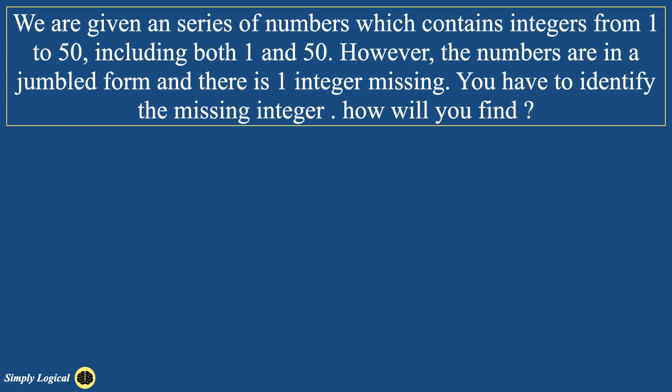We are given a series of numbers which contains integers from 1 to 50, including both 1 and 50. However, the numbers are in a jumbled form, that is they are not arranged in increasing or decreasing order, and there is one integer missing. You have to identify the missing integer. How will you find?